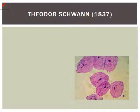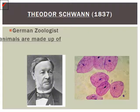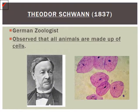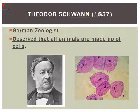Vice versa, Theodor Schwann was a German zoologist, and he observed that all animals were made up of cells. As you can see, the structure of an animal cell is quite different from a plant cell. Plant cells have a nice rectangular shape, whereas animal cells are more round and they lack a cell wall and the chloroplast, which makes the cell green.